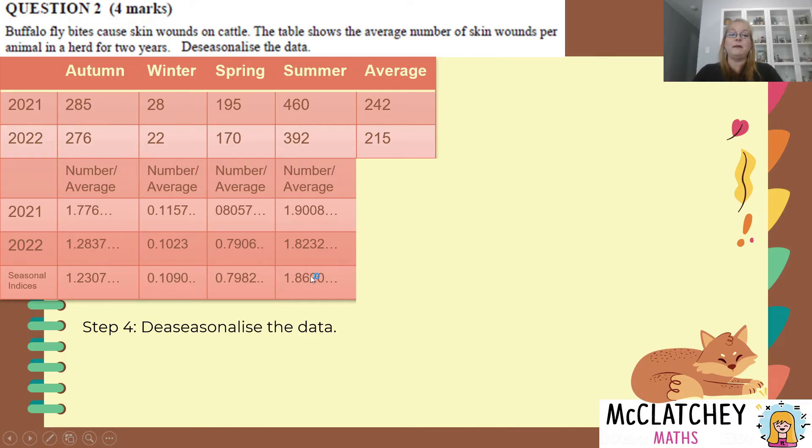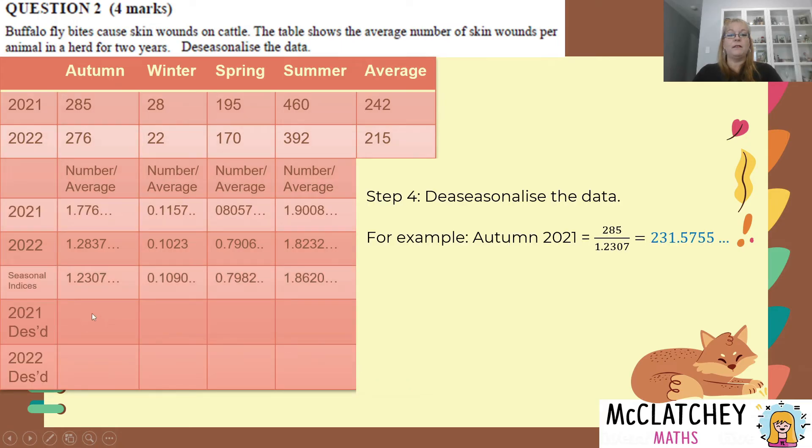Our final step now is to de-seasonalize the data. What that means is we're going to take every one of these numbers and we're going to divide it by its respective index. So for example, 285, I'm going to divide that by 1.2307 and I'm going to get a de-seasonalized figure for autumn 2021. So that will be 231.5755. And I'm going to pop these de-seasonalized pieces of data into the rows underneath.